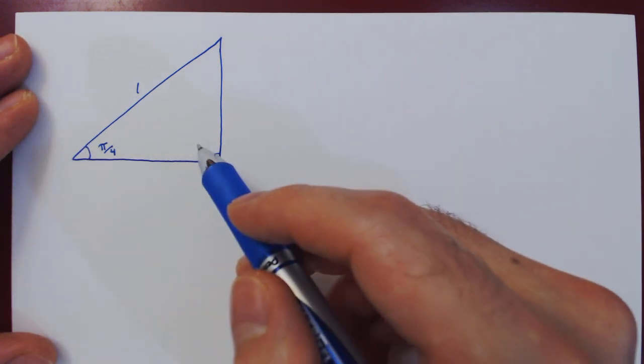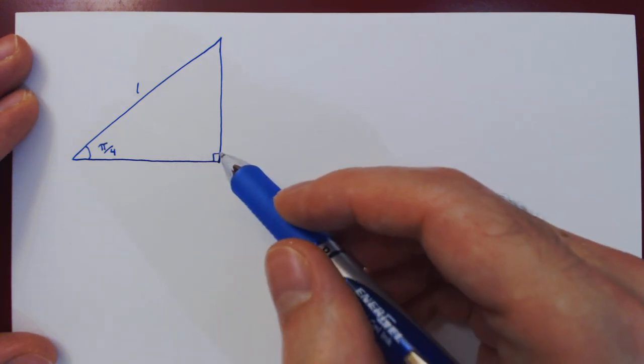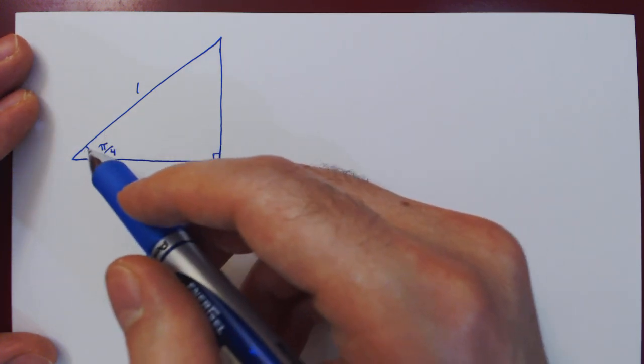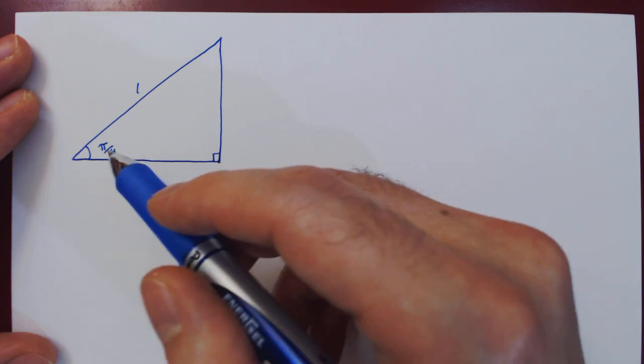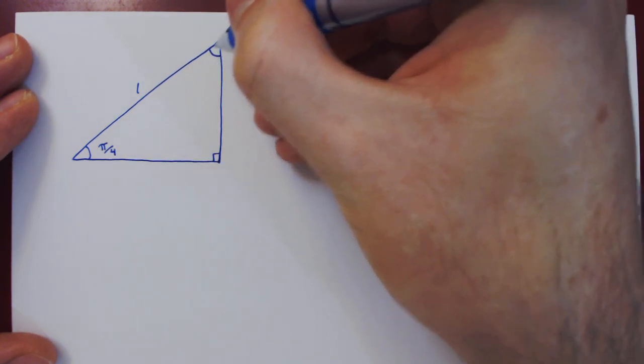Well, since the interior angles of any triangle have to add up to pi, and this one is pi over 2, then these two have to add up to also pi over 2. But since this one is pi over 4, then the other one must also be pi over 4.